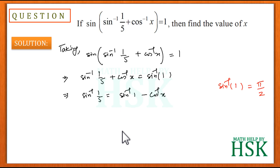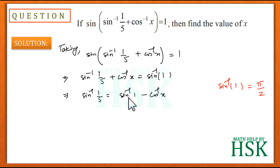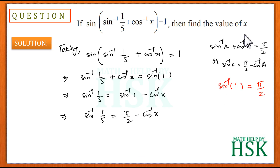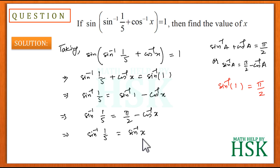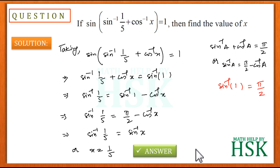We know sin⁻¹(1) = π/2, since sin(π/2) = 1. So the equation becomes sin⁻¹(1/5) = π/2 − cos⁻¹(x). Using the identity sin⁻¹(a) + cos⁻¹(a) = π/2, we know sin⁻¹(a) = π/2 − cos⁻¹(a). Therefore π/2 − cos⁻¹(x) = sin⁻¹(x), which implies x = 1/5. This is the required answer.